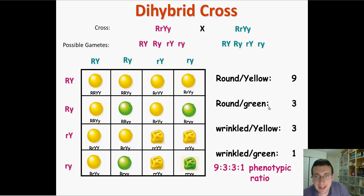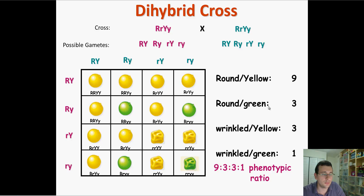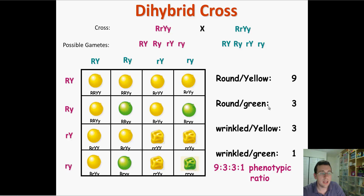In our last video we did a dihybrid cross involving two hybrids for both traits, and we saw the 9:3:3:1 ratio and figured out how that works. Now in this video we're going to do a slightly different cross.